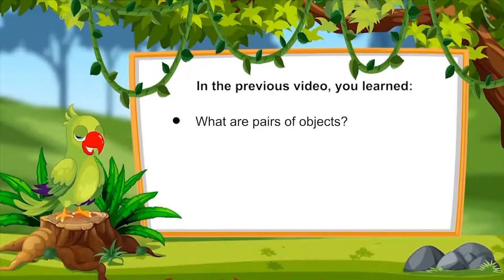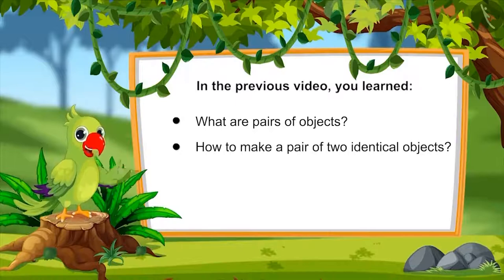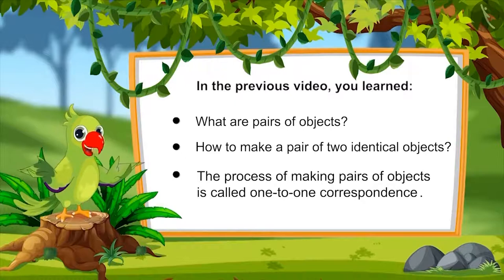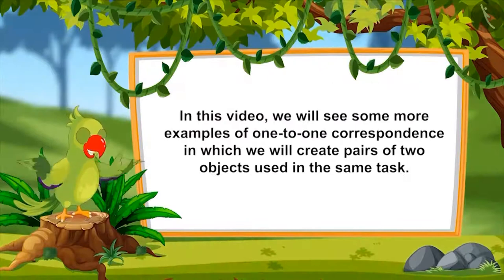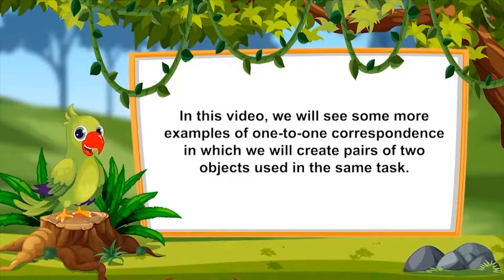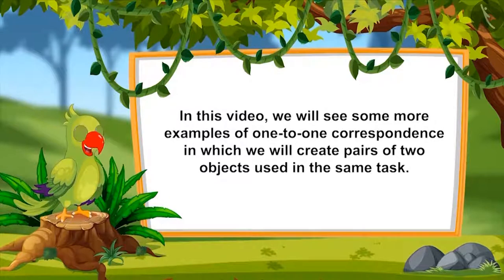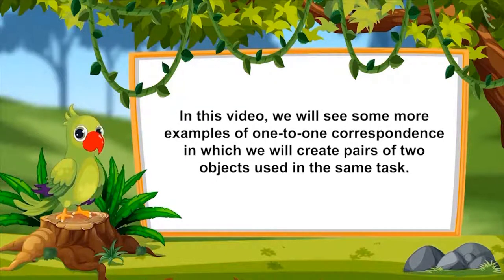So children, in the previous video you learned what are pairs of objects, how to make a pair of two identical objects, and this process is called one-to-one correspondence. In this video, we will see some more examples of one-to-one correspondence, in which we will create pairs of two objects used in the same task.